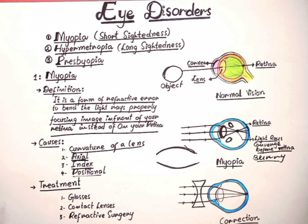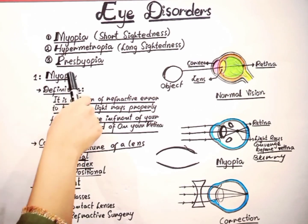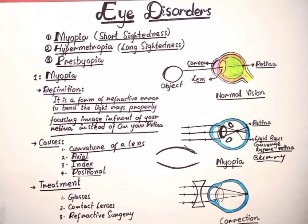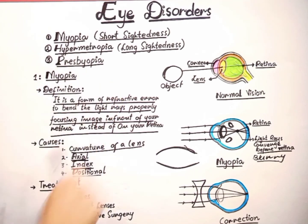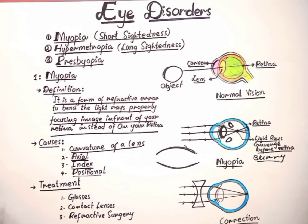So this is all about myopia, near or short sightedness. In our next lecture, we will discuss hypermetropia or long sightedness. I hope you understood this lecture. Don't forget to subscribe to my channel Learn Science with Me, like this video, and share it with your friends. Thank you.